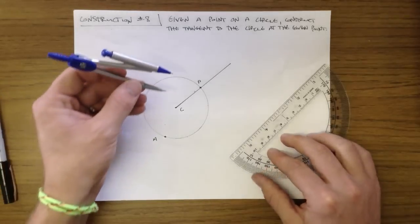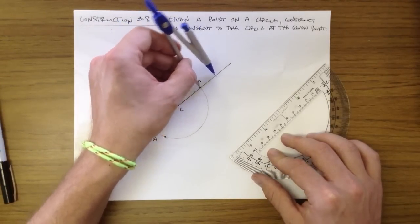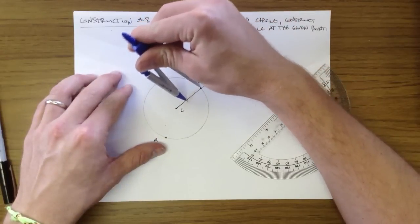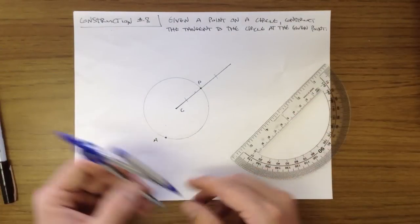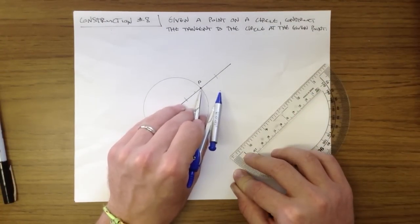So you're going to take your compass and you're going to basically create a segment with P as its midpoint. So you've got P here, taking a compass and you're just choosing some arbitrary length, doesn't matter what you're using. And what we've done is we've created a segment.